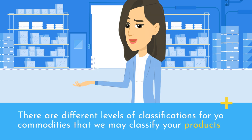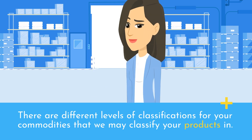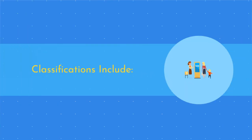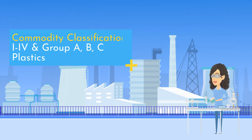There are different levels of classifications for your commodities. Classifications include Commodity Classification I through IV and Group A, B, and C Plastics.